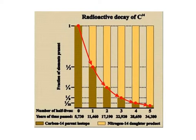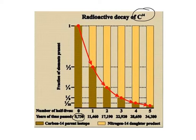Now, in this particular diagram, we're looking at radioactive decay for the parent isotope carbon-14. We know that one half-life is 5,730 years, two half-lives will be 11,460, and so on. They happen to put on the y-axis the fraction of parent remaining.